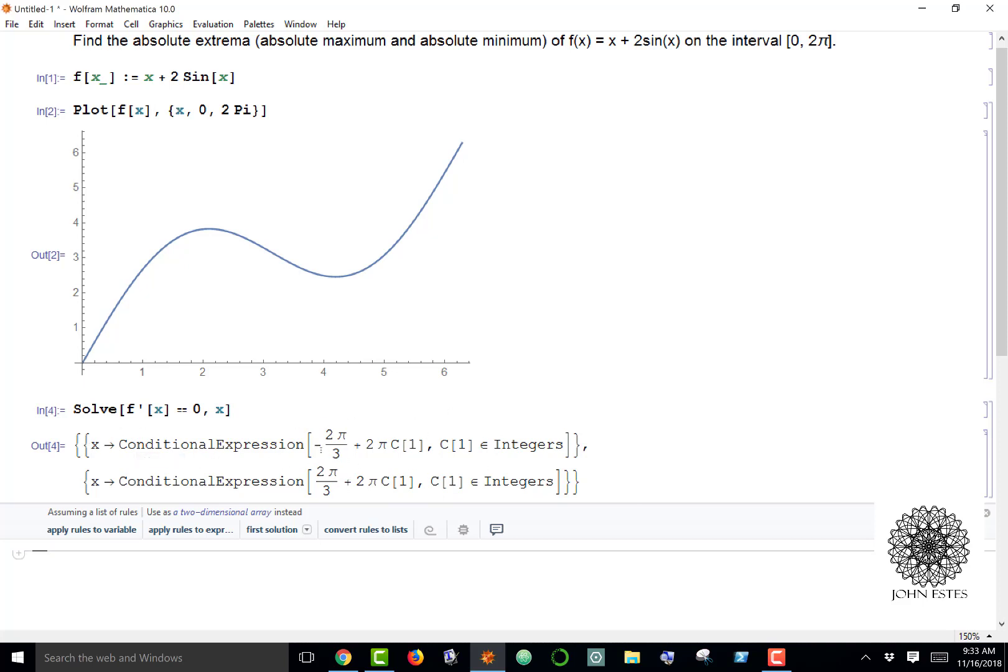The problem is Mathematica is a little too good for what it wants to do here. You get these conditional expressions—these are your answers with multiples of 2 pi because sine is periodic. That doesn't exactly help us, so we're going to try a different strategy.